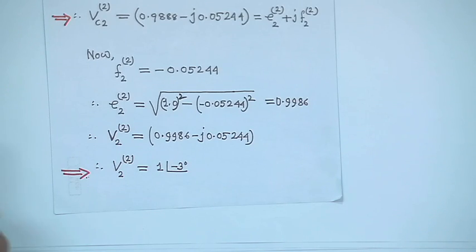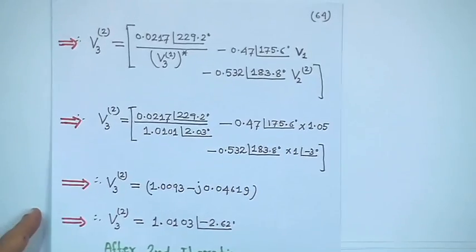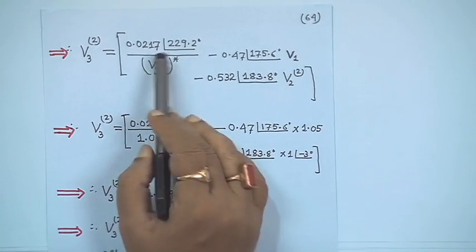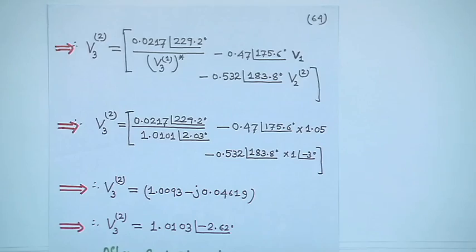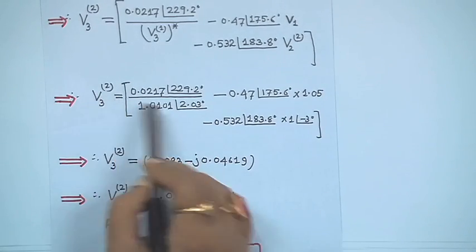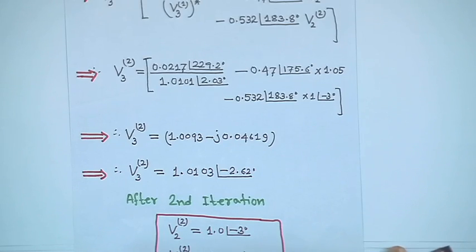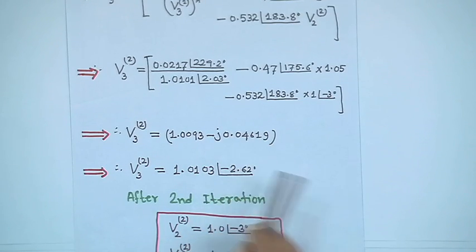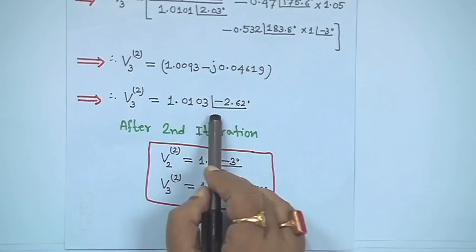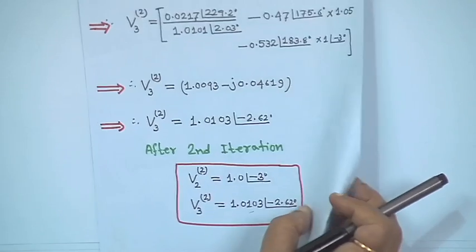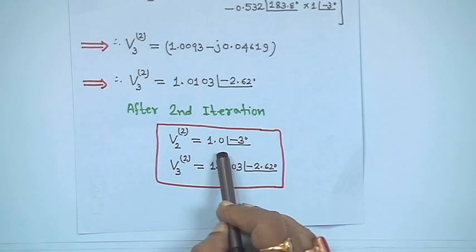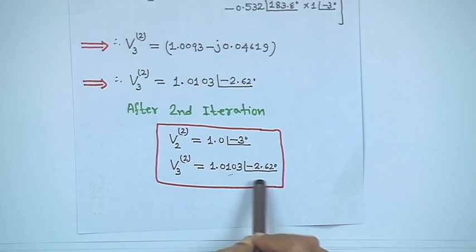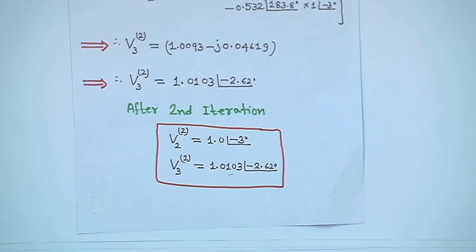Similarly, V₃² is computed using the updated values. The result is V₃² = 1.0093 − j0.04619, giving V₃² = 1.0103 angle minus 2.6 degrees. After the second iteration: V₂² has magnitude 1 at angle minus 3 degrees, and V₃² = 1.0103 angle minus 2.6 degrees.